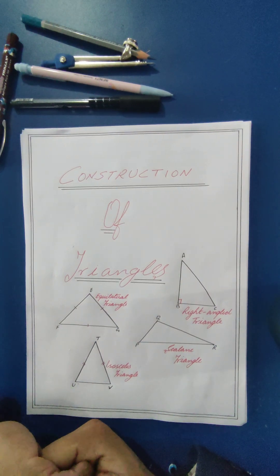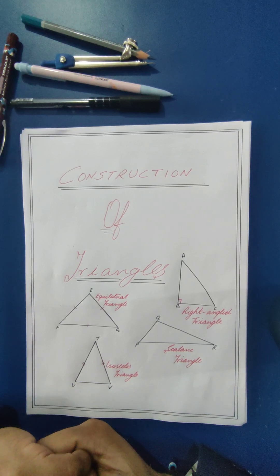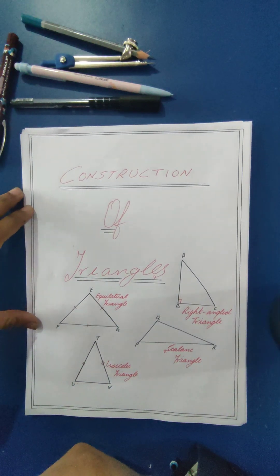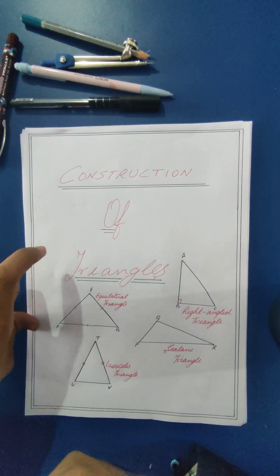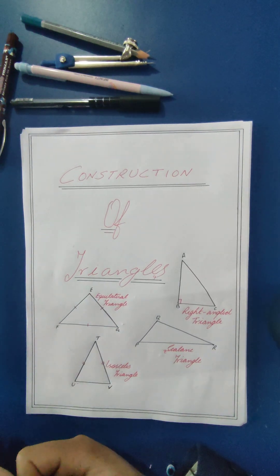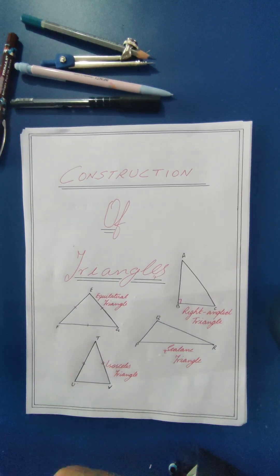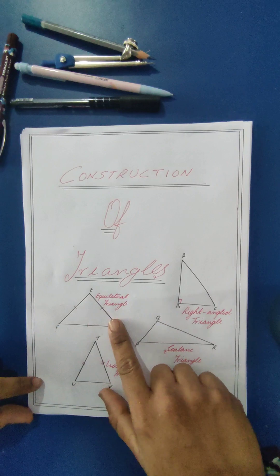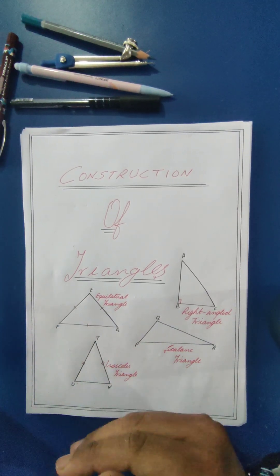Good morning students. This video is for Class 7, subject Mathematics. In this video we will do the revision of Chapter Triangles. In this chapter there is one exercise on construction of triangles. A triangle has three angles, the sum of which is 180 degrees. A triangle is a closed plane figure bounded by three line segments. There are different types of triangles: right angle triangle, equilateral triangle, scalene triangle, and isosceles triangle.